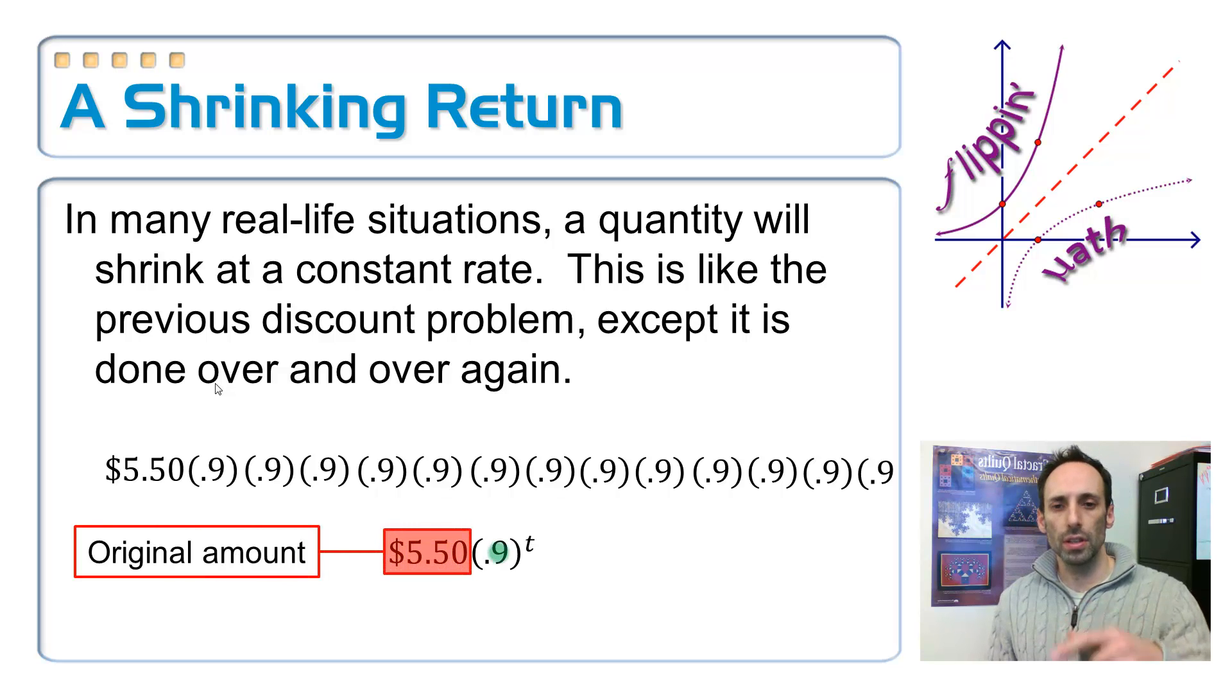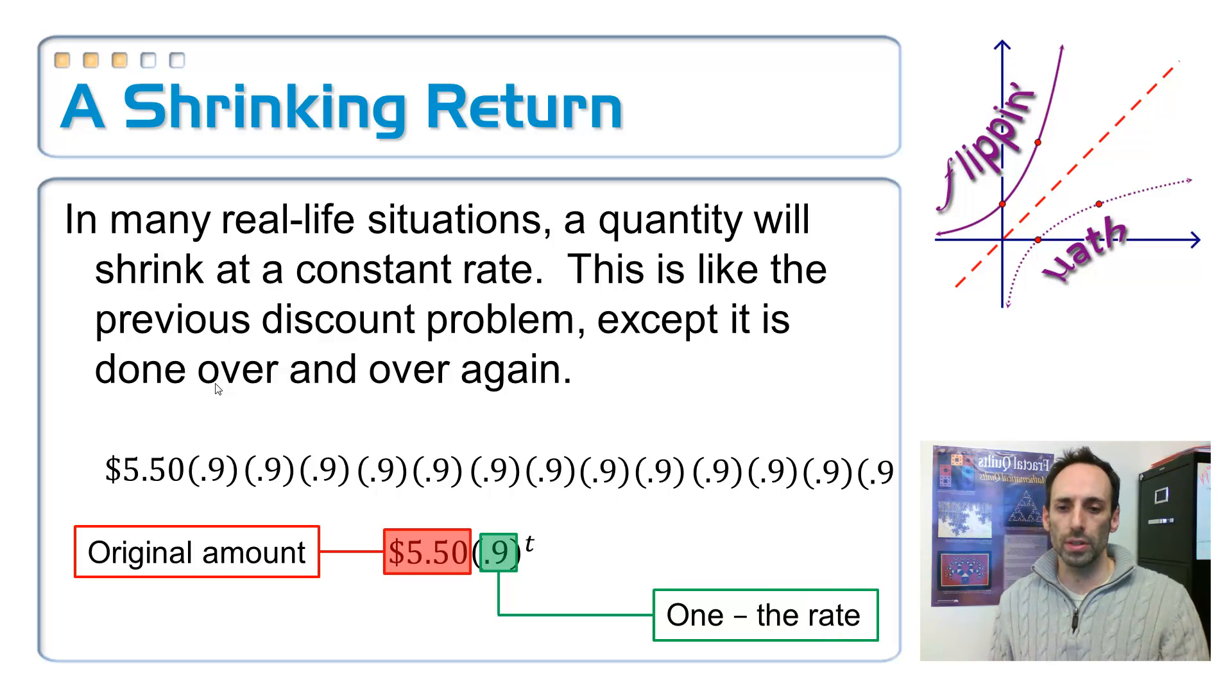Now you can see that this is also an exponential equation, depending on how many times you do it, raised to that t power. Original amount still out front, $5.50. This time with this exponential equation, the B value, the thing that's in green is 0.9, which is smaller than 1. So this is getting smaller and smaller, and this is an example of exponential decay.